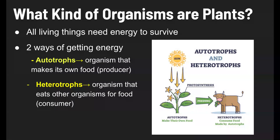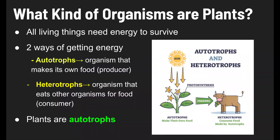So what kind of organisms are plants? Are they autotrophs or heterotrophs? Plants are autotrophs. They make their own food, and that food is their source of energy that they need to survive.